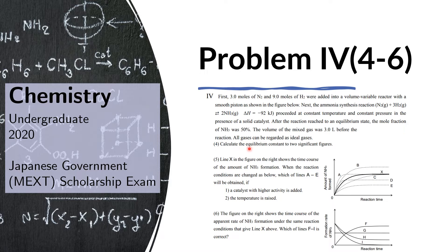Question four is: calculate the equilibrium constant to two significant figures. Question five: line x in the figure on the right shows the time course of the amount of ammonia formation. If the reaction conditions are changed as below, which of the lines A to E will be obtained? If one, a catalyst with higher activity is added, and two, the temperature is raised. Finally, question six: the figure on the right shows the time course of the apparent rate of ammonia formation under the same reaction conditions that give line x. Which of the lines F to I is correct?